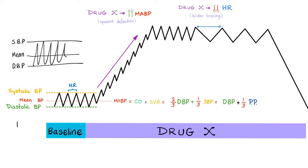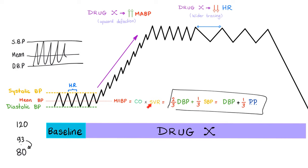For example, if your systolic blood pressure is 120 and diastolic is 80, you might say the mean is 100, but the mean is actually 93 — it's closer to the diastolic. After receiving a drug, the systolic blood pressure increased, the diastolic has gone up, and the mean has also gone up compared to your baseline.